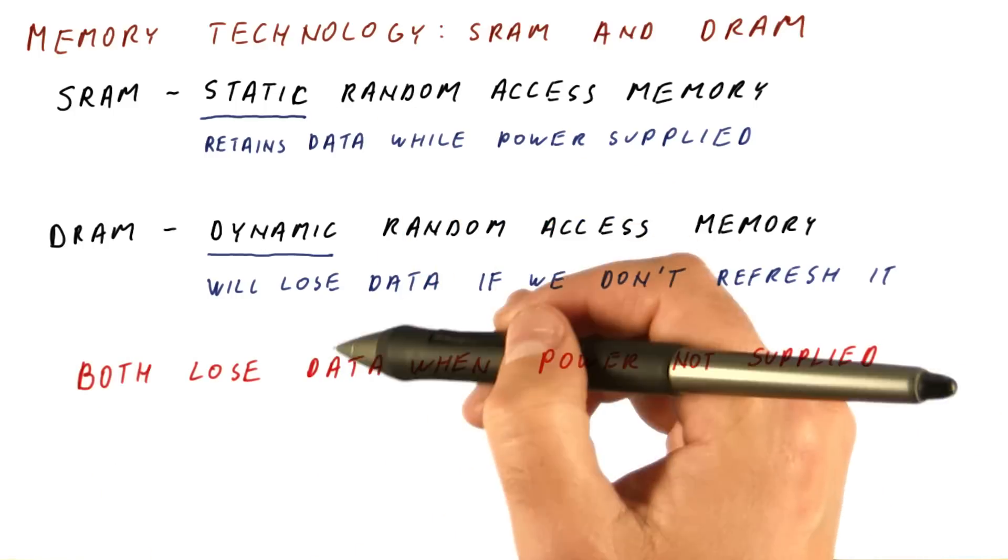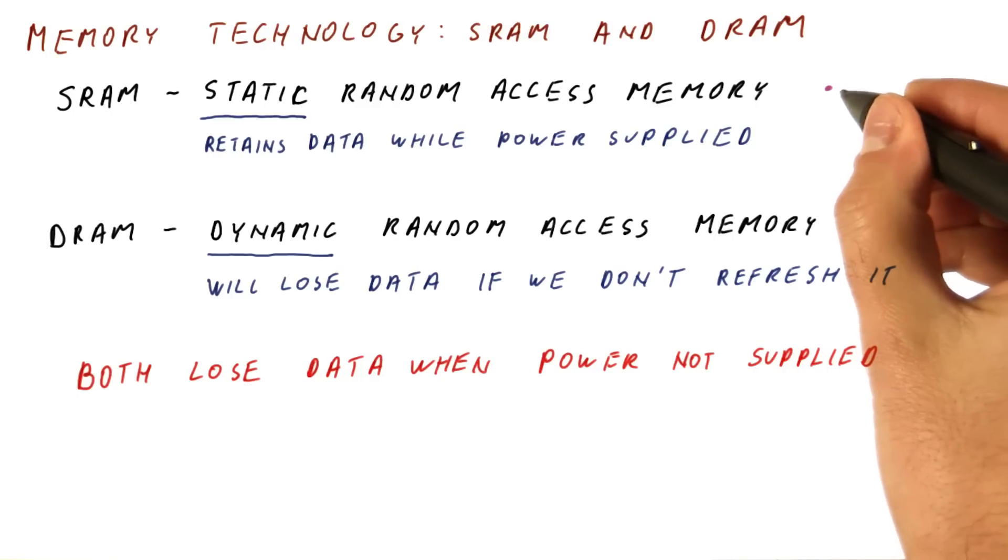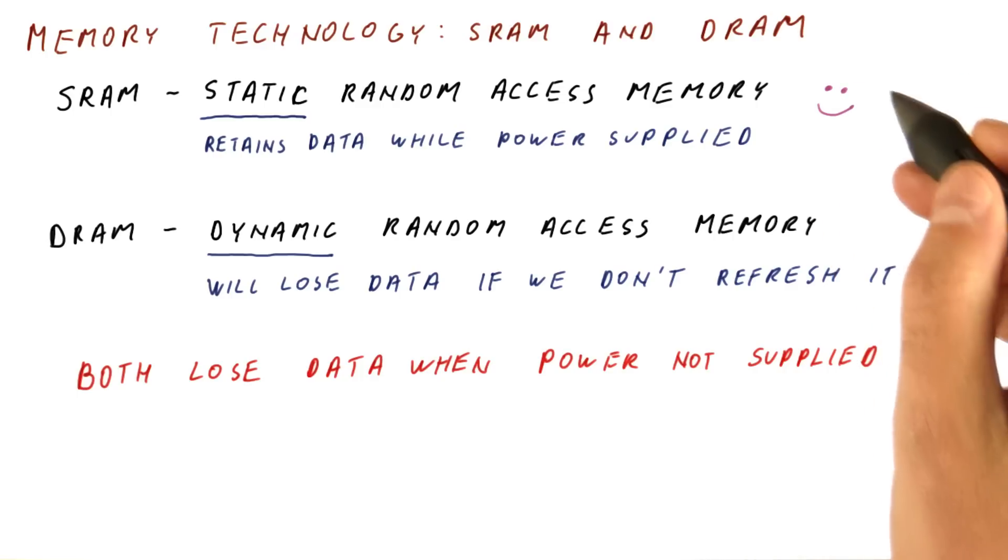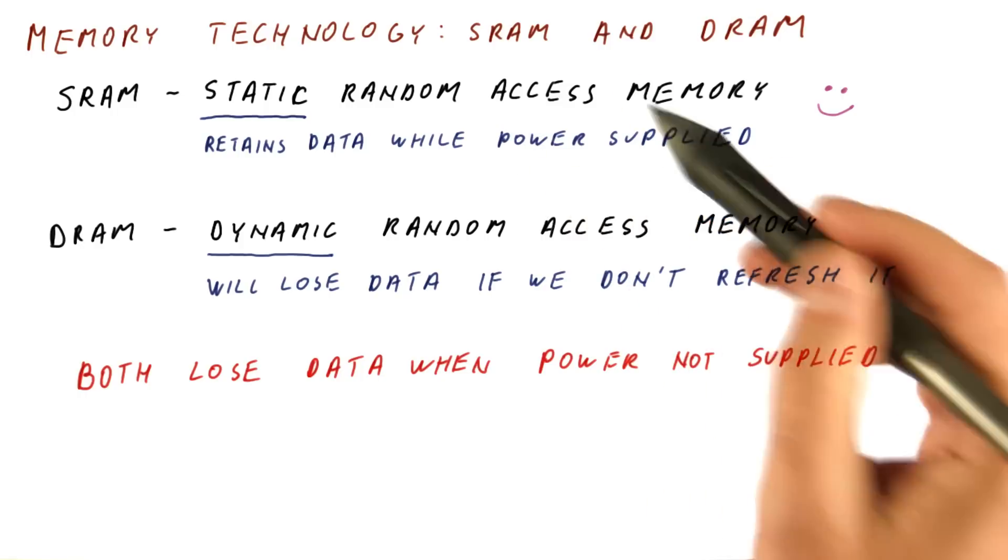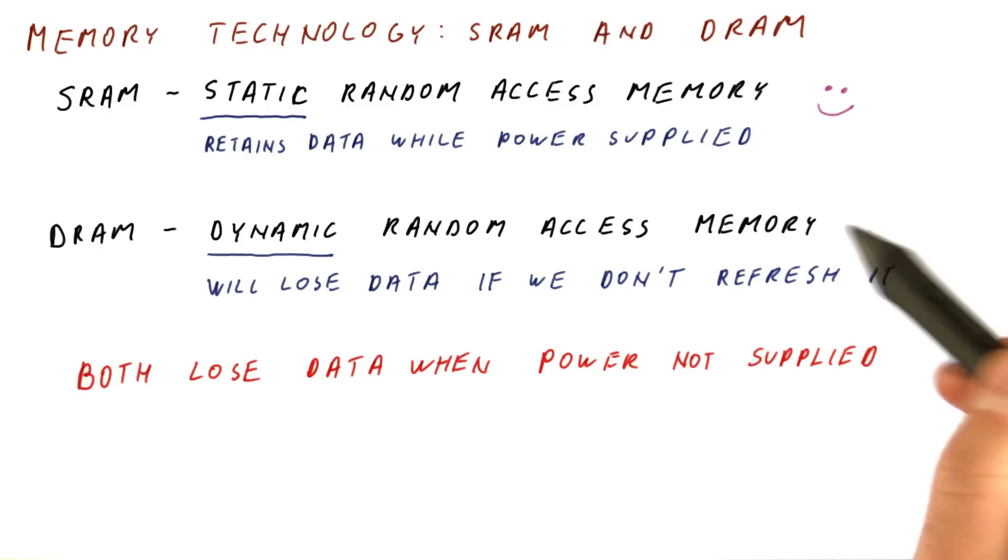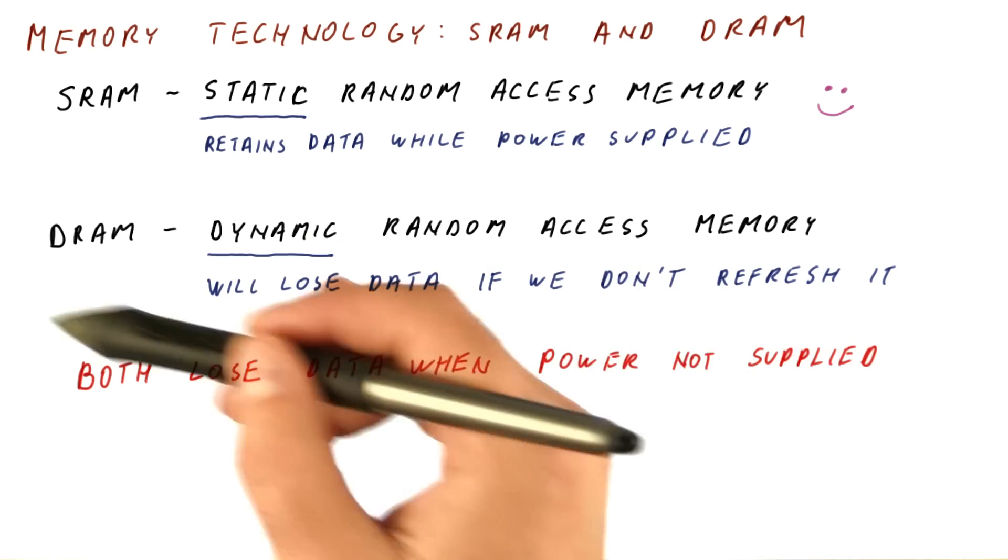Note that both types of memory will lose data when power is not supplied, such as when we turn them off. It seems like SRAM is better—we don't have to do anything for it to keep the data. Whereas with DRAM, we actually have to access the data and write it back in for it not to lose it. So why do we want DRAM?